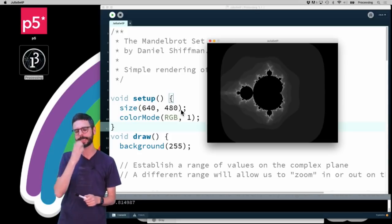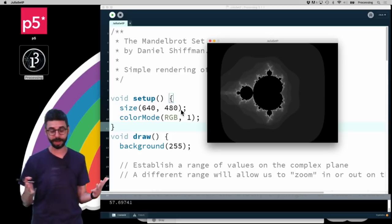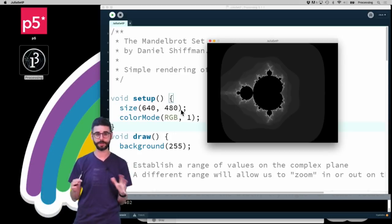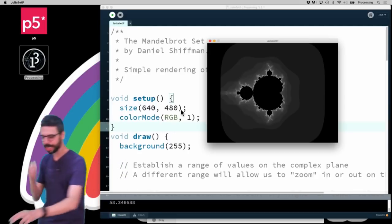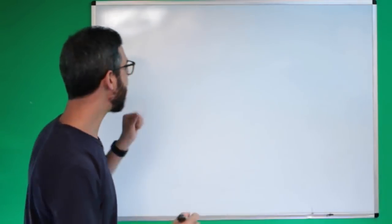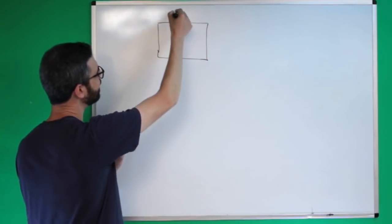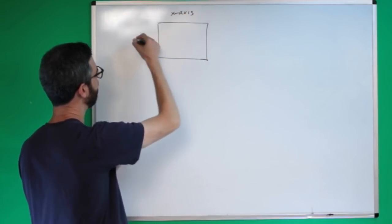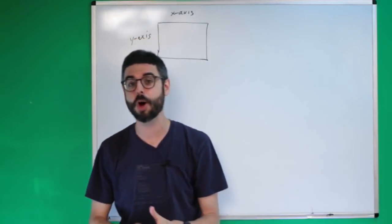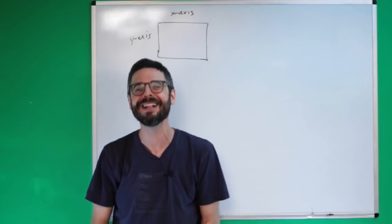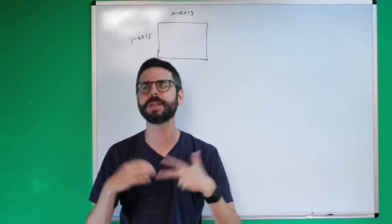I'm going to assume a little bit of knowledge which you can pick up by watching the previous video about the Mandelbrot set if some of the stuff is confusing to you. So first let me just remind you what's going on. The idea is that there is a canvas with an x-axis and a y-axis, and I'm using it to visually represent something called the complex plane.